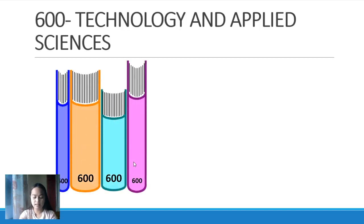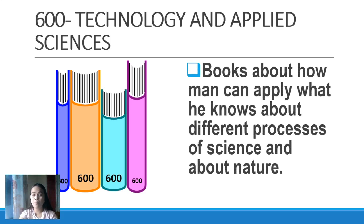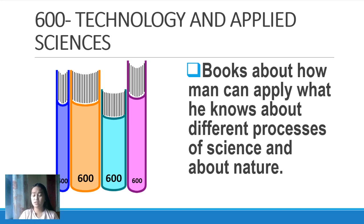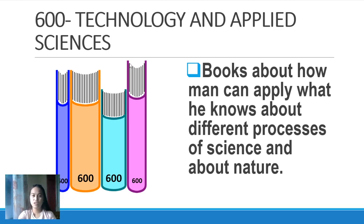Next is 600 — Technology and Applied Sciences. From the word technology, number 600 covers books about how man can apply what he knows about different processes of science and nature. It is the application of what you have learned in science processes such as observing and communicating. When you have those skills and processes, you apply them — technologies like ICT, computers, and others. So inventions, technology, and applied science are found here.